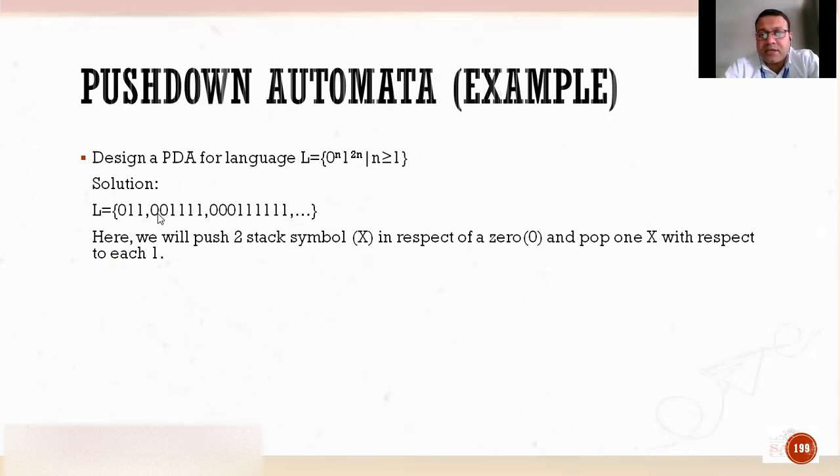Let's say if I take an example of this string: double zero and four times one. So what will happen? For each zero I will push 2x. So let's suppose for first zero I have pushed 2x, for second zero I have pushed again 2x. So the number of x is now equals to the number of ones. So for every one, what I will do? For every one I will pop one x at a time from the stack.